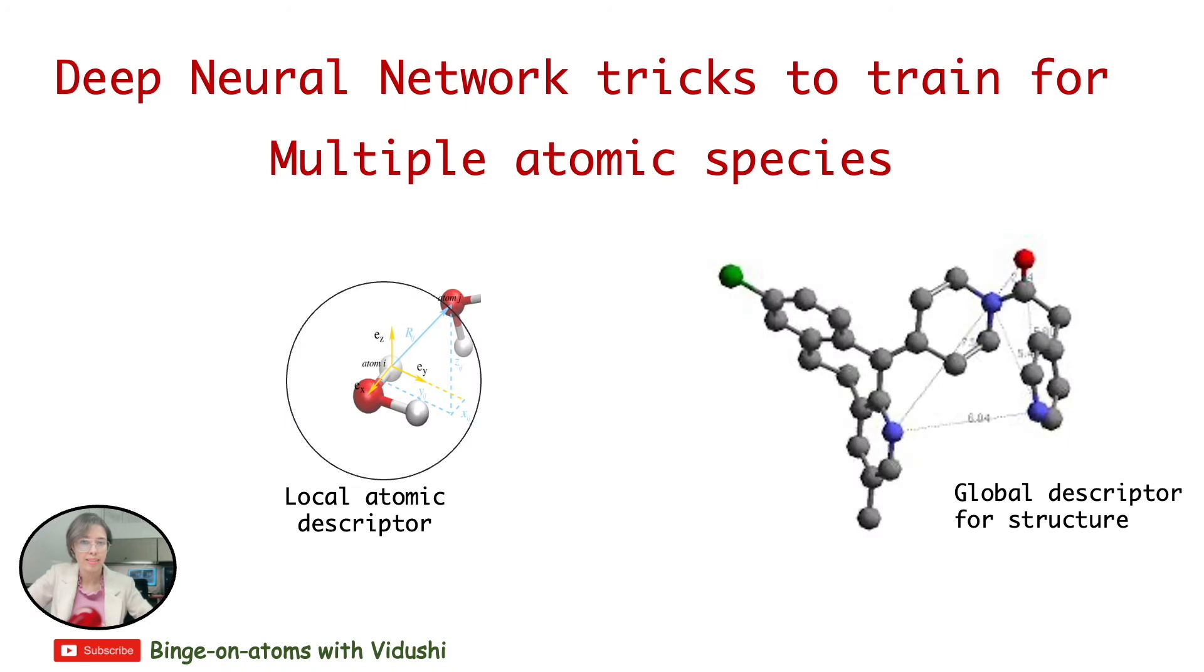Just one simple reminder: most commonly used methods in neural networks either describe local environment of each atom within a specific radius as local descriptor, or consider global representation of entire structure as global descriptor.